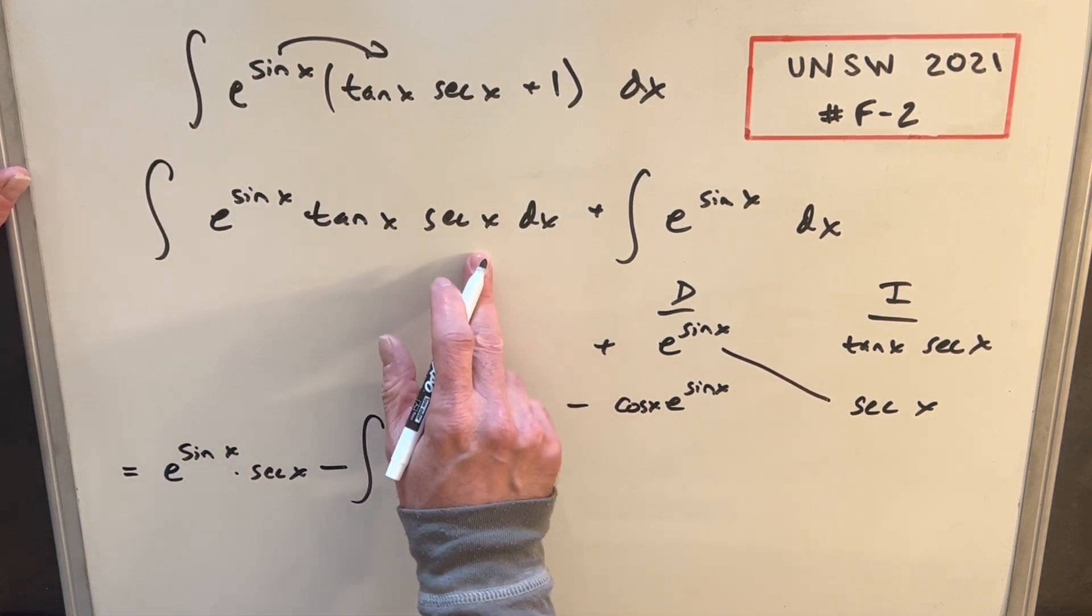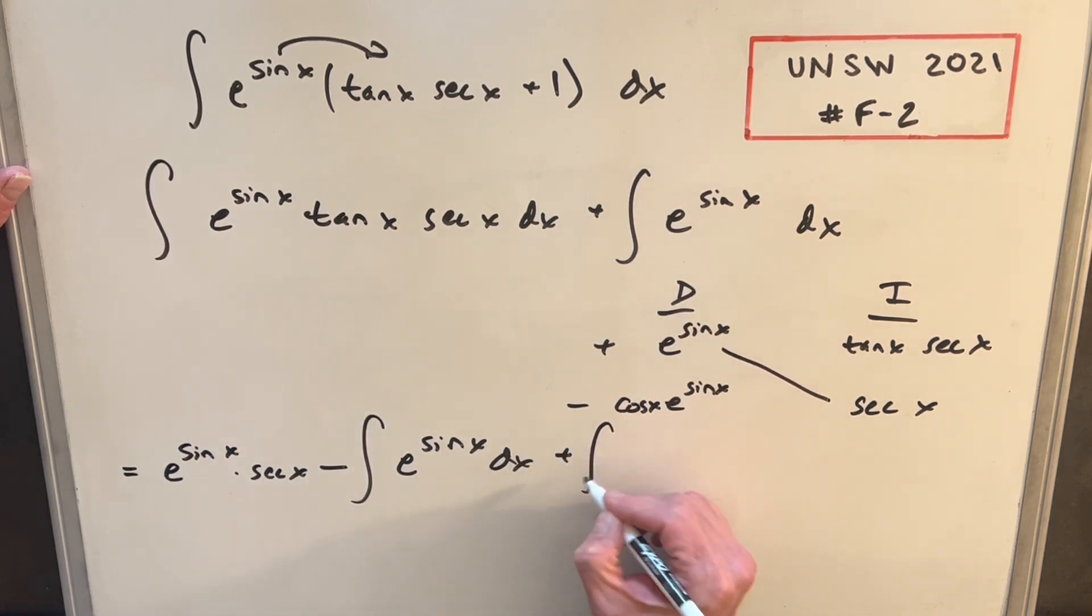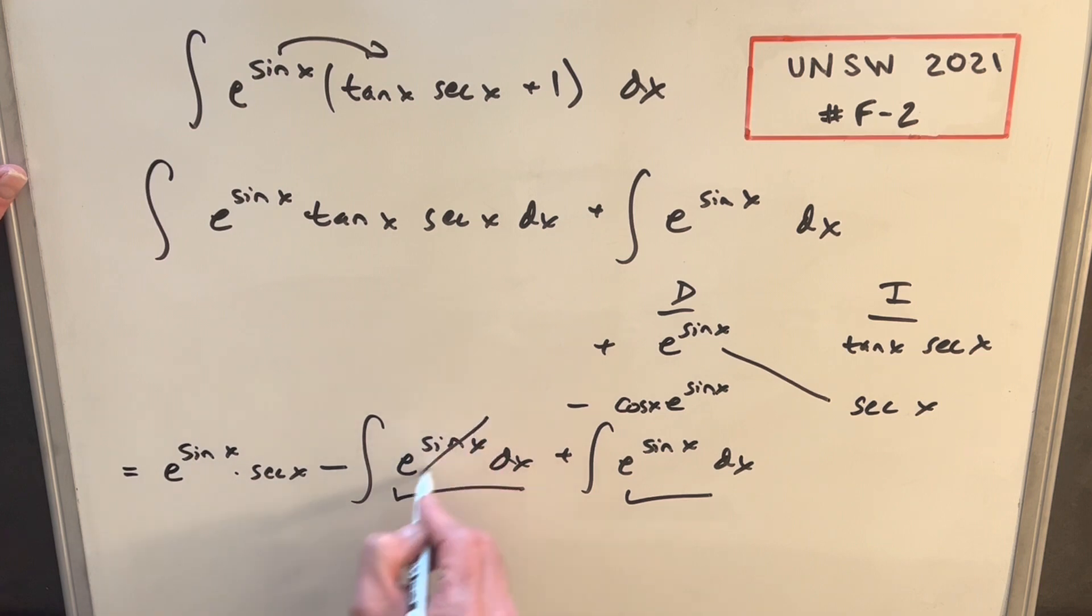But then, going back to our problem here, we're evaluating this whole thing, so we need to include this. So we're adding e to the sine x dx, but this integral and this integral are exactly the same. And we're subtracting it, so this will cancel. We'll just have a zero there.